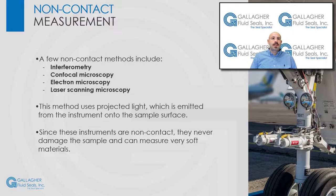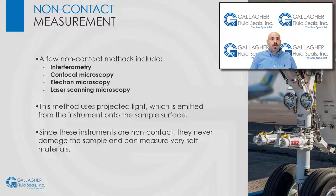Now, let's discuss non-contact measurement methods. A few include interferometry, confocal microscopy, electron microscopy, and laser scanning microscopy. Most of these methods involve emitting light from the measuring instrument onto the sample surface. Because these methods are non-contact, the sample surface is never damaged, and very soft materials can be measured.